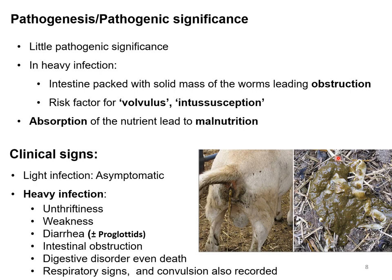In light infections there are no clinical signs — this is called asymptomatic infection. In heavy infections, major clinical signs include unthriftiness — where the animal is unable to gain weight despite adequate quality food — as well as weakness, diarrhea, and intestinal obstruction. In some cases, digestive disorder, death, respiratory signs, and convulsions are also recorded.